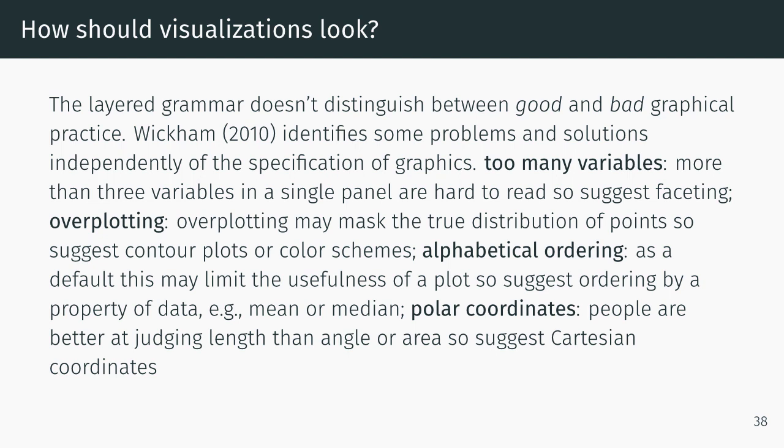There are some problems and solutions that are independent of the grammar of graphics. Too many variables: if there are more than three variables in a single panel, they're hard to read. He suggests faceting, though this is his opinion. There has been research on how many variables are too many, and not all of it agrees with him. Overplotting may mask the true distribution of points; he suggests contour plotting or color schemes. Alphabetical ordering as default may limit usefulness; he suggests ordering by a property of the data like the median.